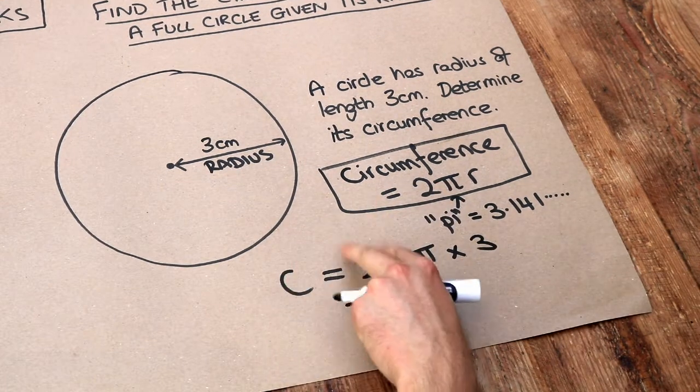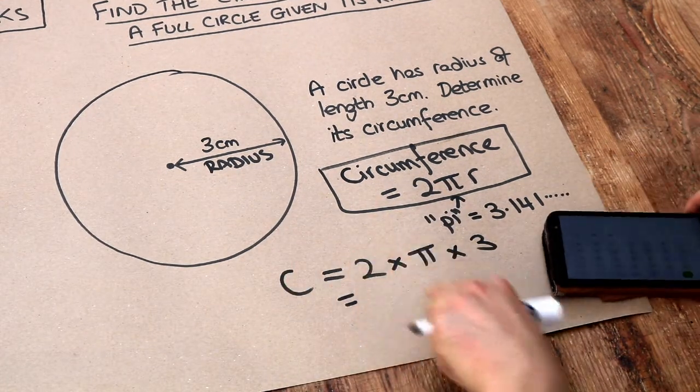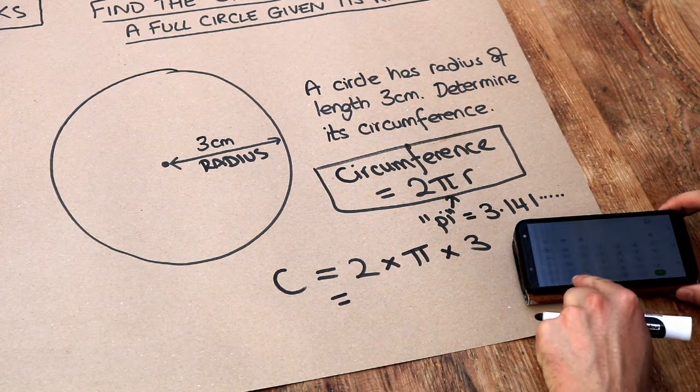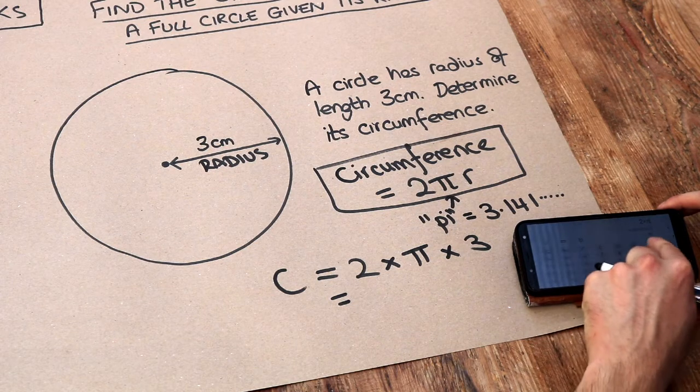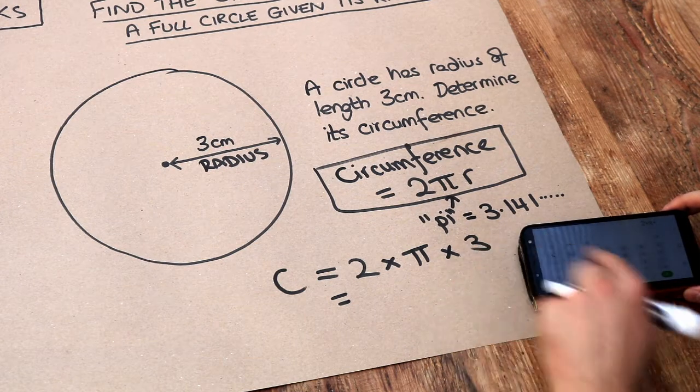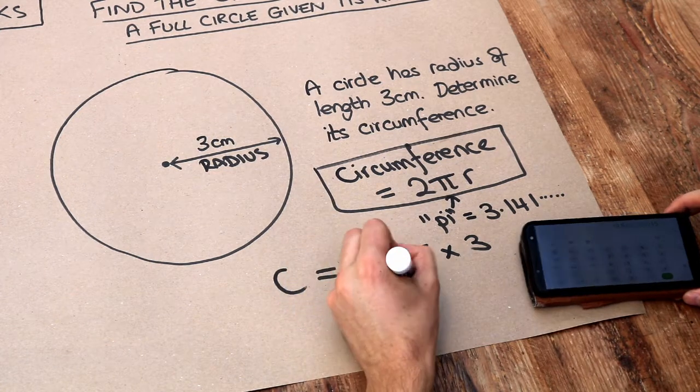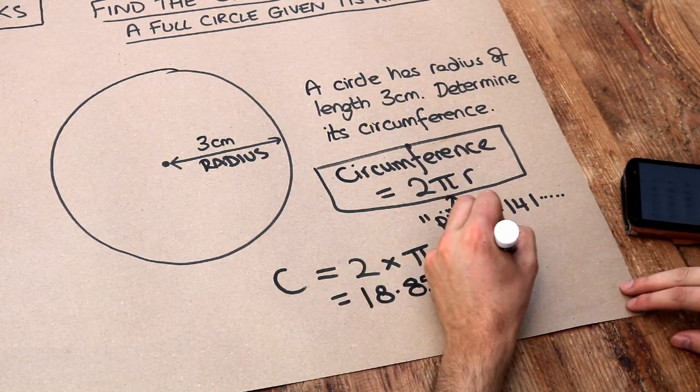Now if I do that in my calculator, making sure it's a scientific calculator, we do 2 multiplied by pi. I found pi here, even though it's my phone. Multiplied by 3. And that gives me 18.85 to 2 decimal places.